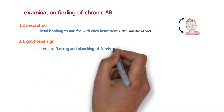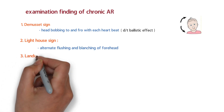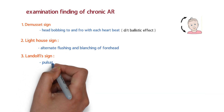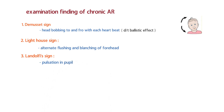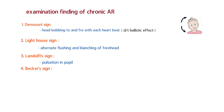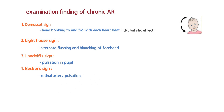Moving to the eyes, the next sign is Landolfi's sign, in which there is pulsation in the pupils. We also have Becker's sign, where retinal artery pulsation is observed. So in the eyes we have two signs: Landolfi's sign and Becker's sign.